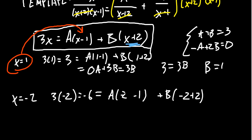You'll notice here that -2+2 is 0, and therefore, B is annihilated here. Previously, A was annihilated by choosing x is 1. So we annihilate B by choosing x to be negative 2. And so we get -6 is equal to -3A. Divide both sides by negative 3. We get A equals 2.